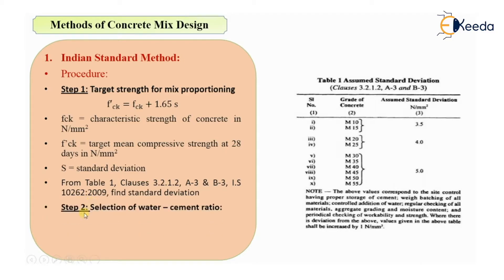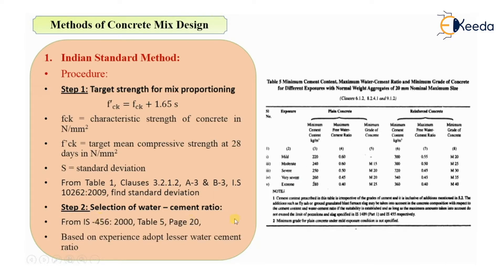The next step, after finding F'CK (the target mean strength), is to select the water cement ratio. The water cement ratio can be taken from IS456-2000, Table 5, page 20. As you can see in this table, various water cement ratios are given for various conditions and you can take it based on experience. We want a lesser water cement ratio because less water cement ratio means more strength.